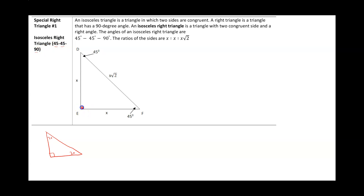For a right triangle, one angle is 90 degrees. The other two angles are 45 and 45. This is called an isosceles right triangle because the sides opposite these two congruent angles are also congruent. An isosceles right triangle is a triangle in which two sides are congruent, with angles 45 and 45.